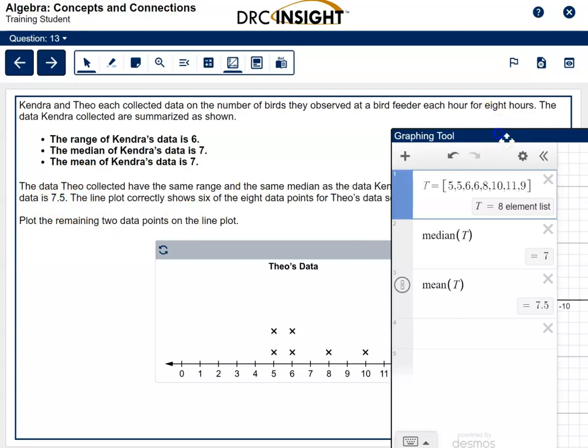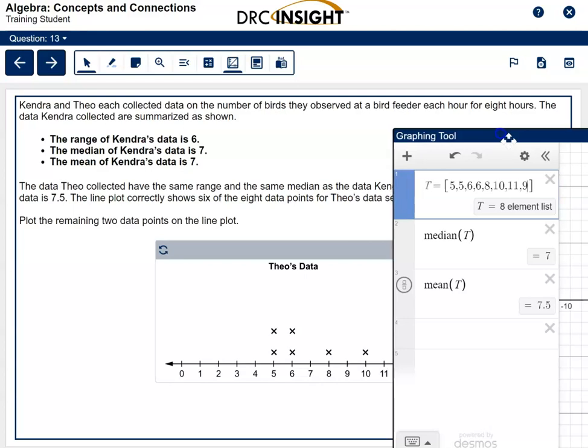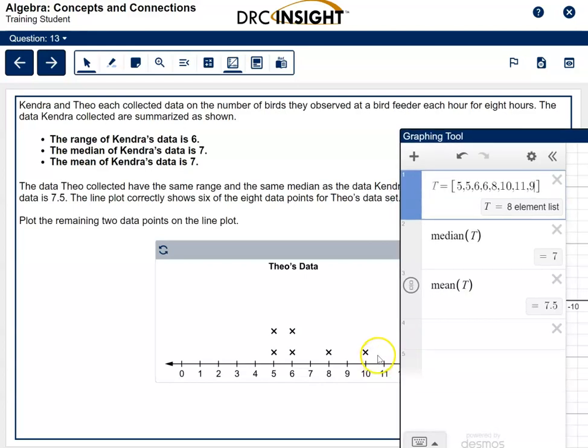We added an 11, so click down here on the 11. It'll add the point. And we added a 9, so click right here and add a 9. And that's all there is to it.